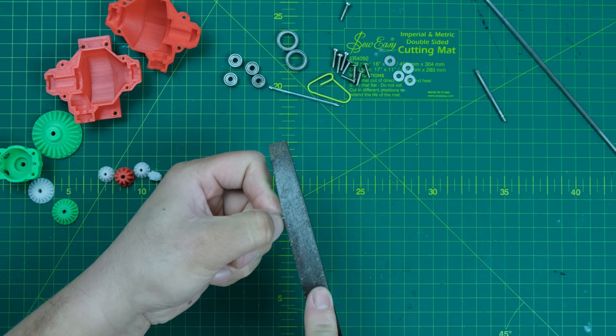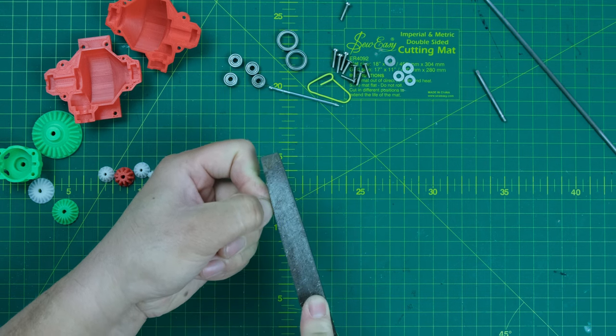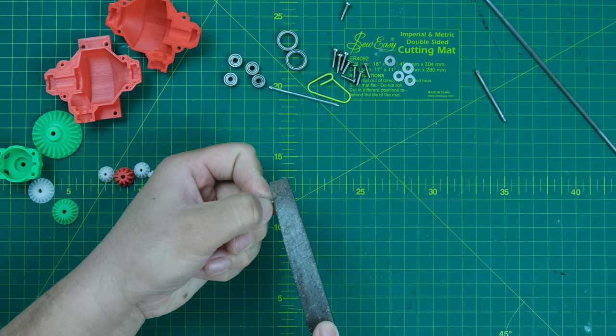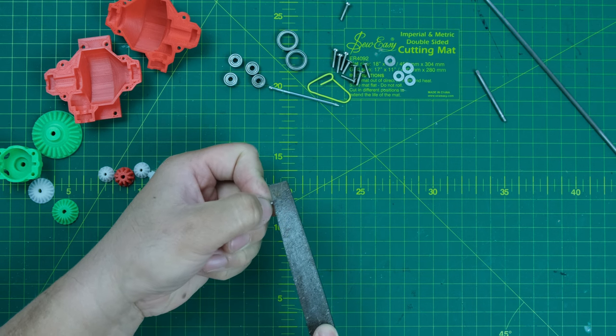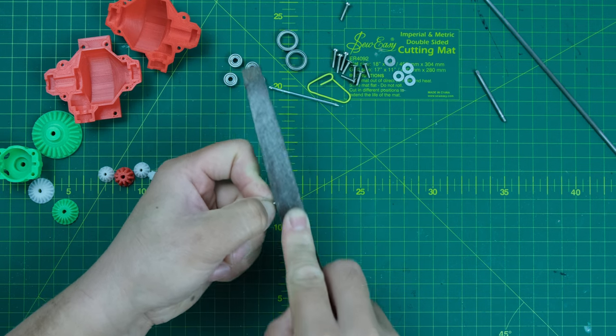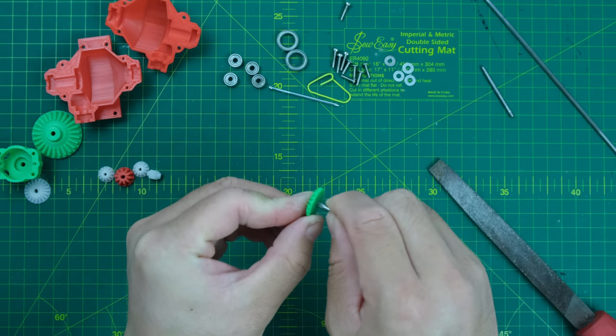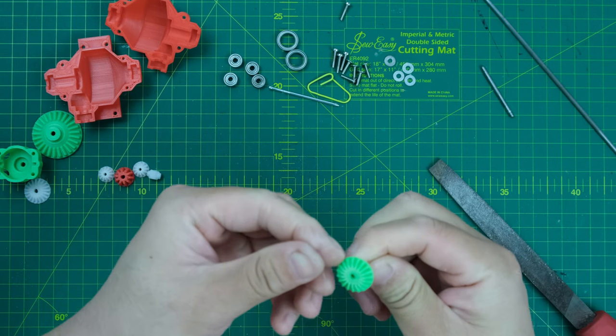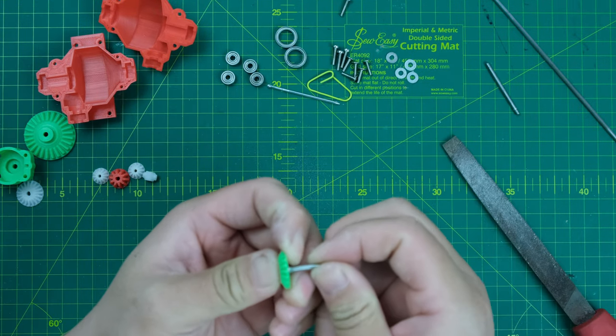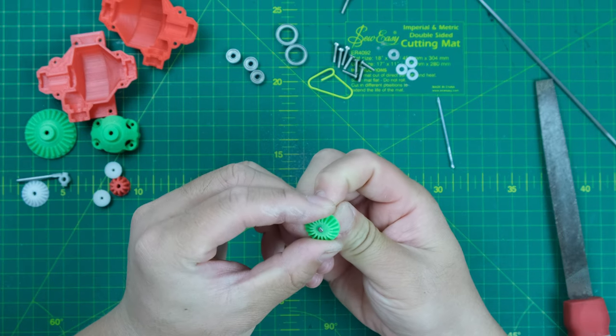Grab a file. Just hold the file firmly against the shaft and keep it perpendicular. Then, just move the file forward backward. Don't try to finish this at one time. You need to try to put the shaft into the D-shaft hole and see if the size fits or not. Please make this progress little by little. Once you have done this step, use the same method to finish another shaft.